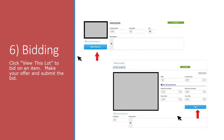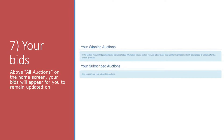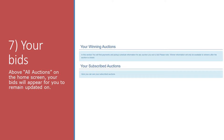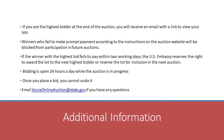Step 6: bidding — click 'View This Lot' to bid on an item, make your offer, and submit the bid. Step 7: your bids appear above all auctions on the home screen so you can remain updated.